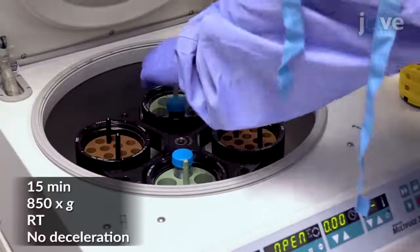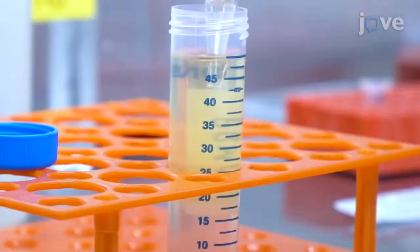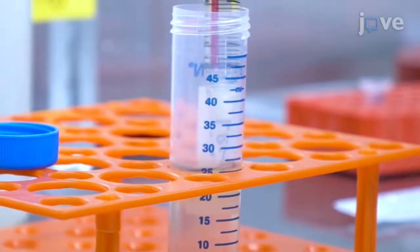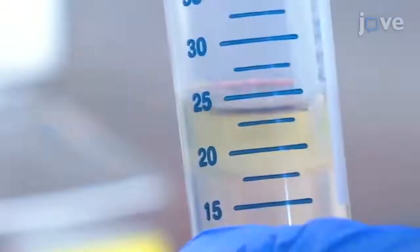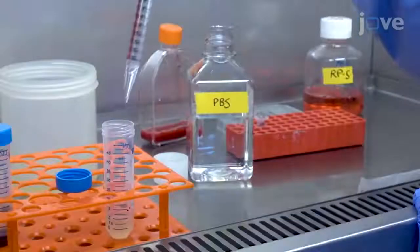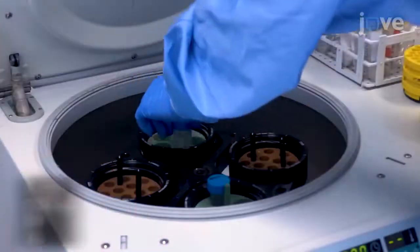Separate the cells by density gradient centrifugation and remove approximately 20 mL of the resulting top plasma layer. Then collect the white blood cell layer, taking care to avoid the red blood cell pellet, and wash the cells three times in fresh PBS.